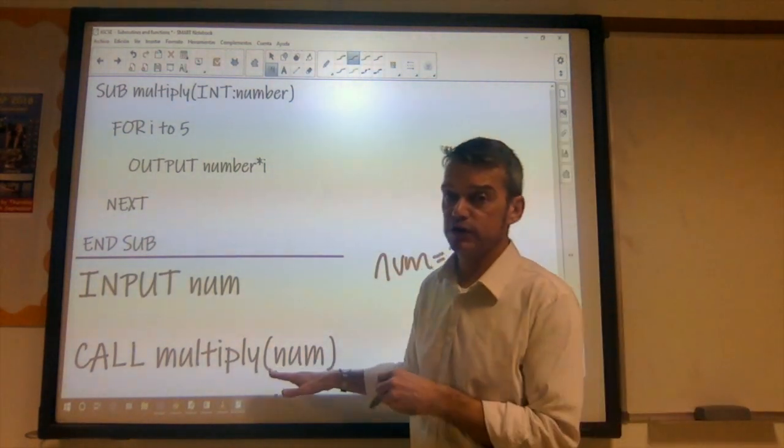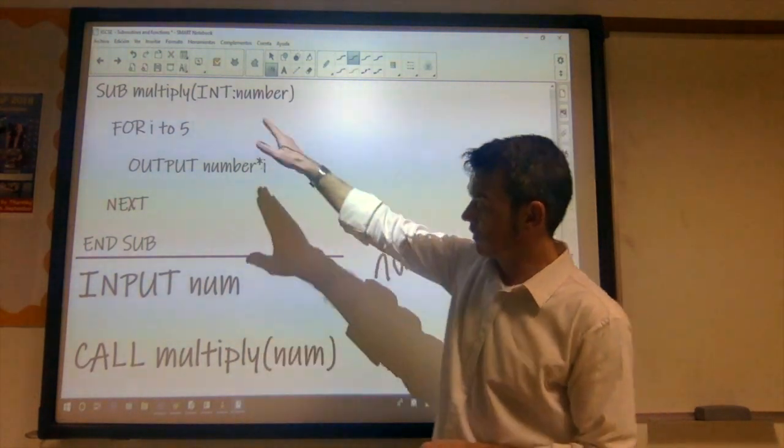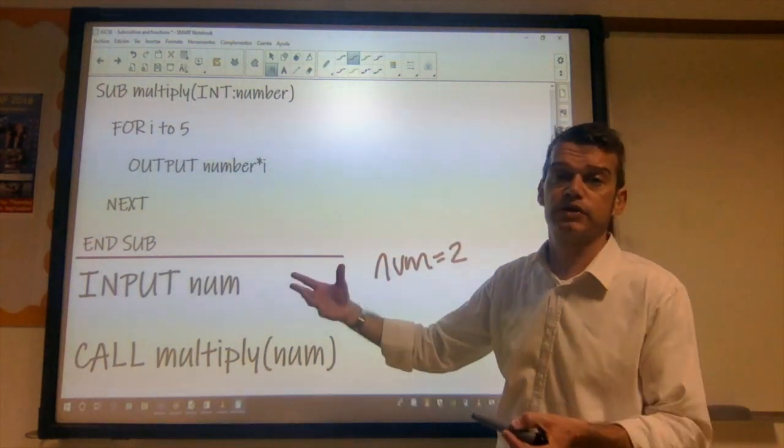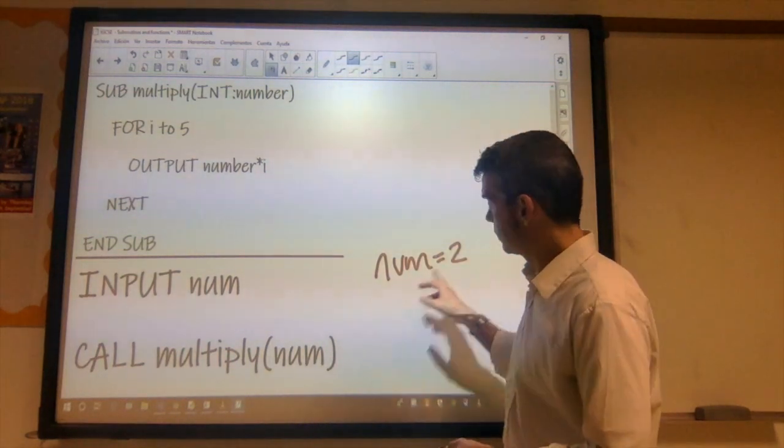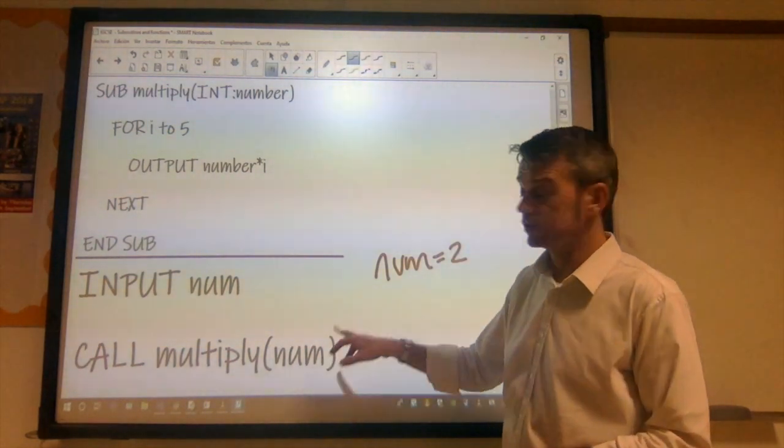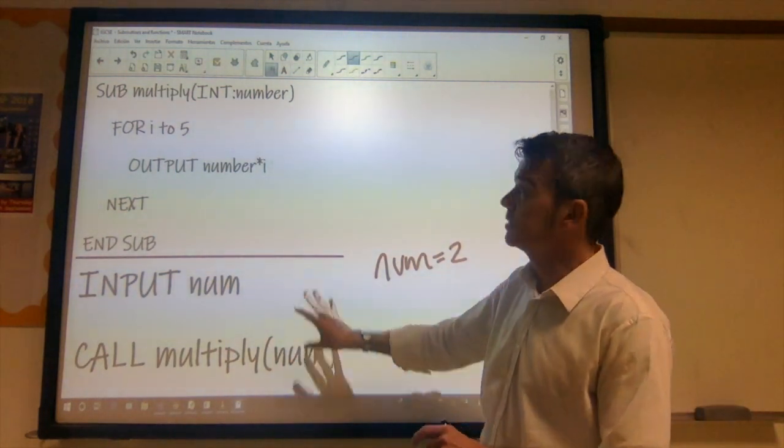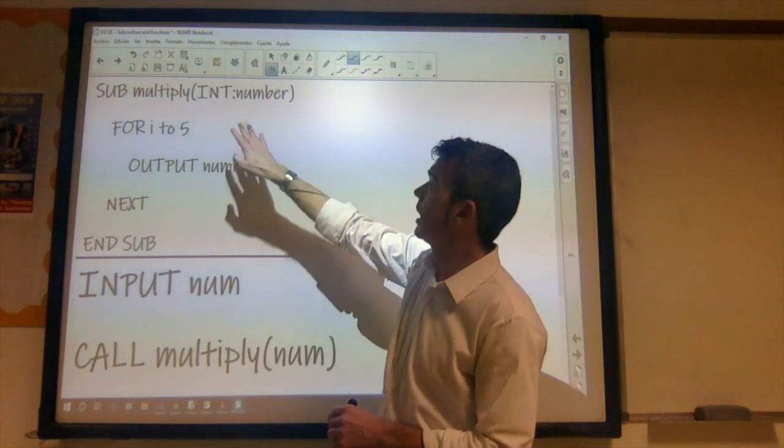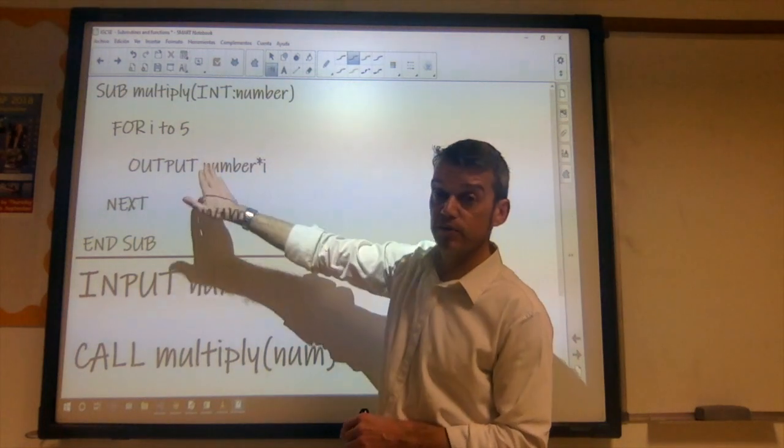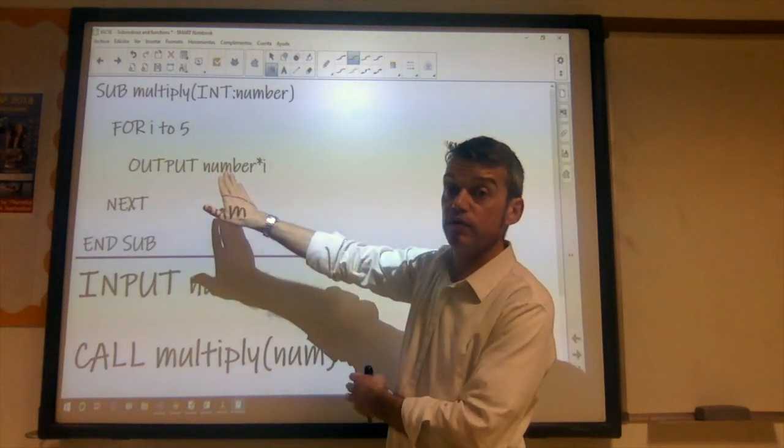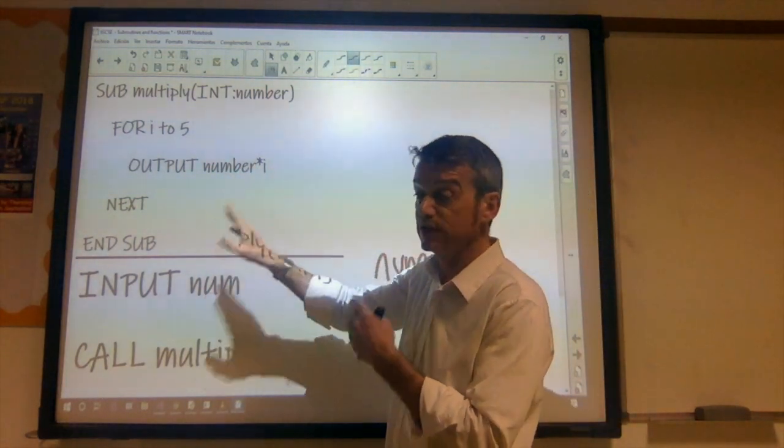And then we get to the function call. So the function call calls the multiply function. So it says I want you to execute the multiply function or the multiply subroutine. And I want you to do it with the value that is in variable num, so 2. So what is passed there, the parameter that's passed to this subroutine is the number 2. And during the execution of the subroutine, where number appears within the subroutine, it will take that value that has been passed to it as the parameter. So whenever we see number in our subroutine, it will be 2.